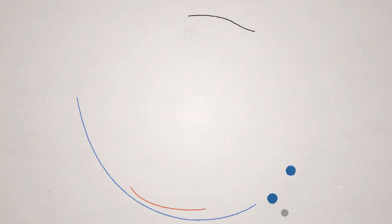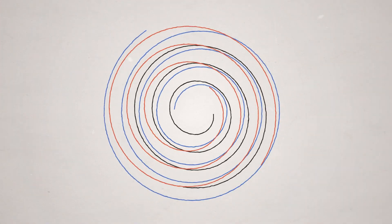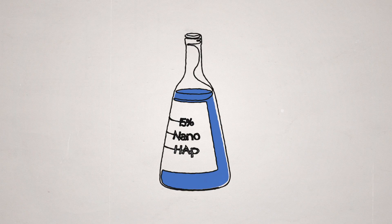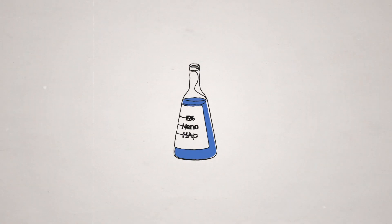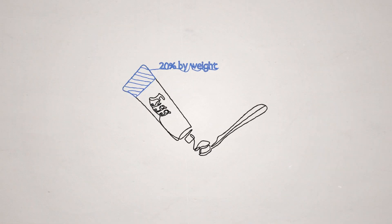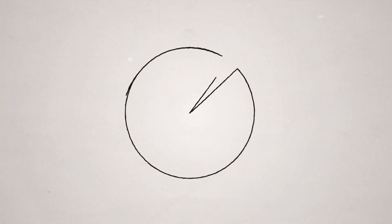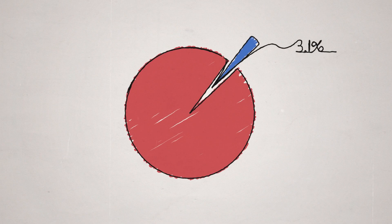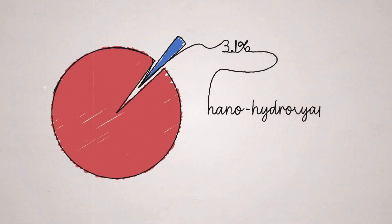Now let's look at our recipe once we mix it all together. Since our 15.5% solution of nanohydroxyapatite makes up 20% of our toothpaste by weight, a little math shows us that a total of 3.1% of our toothpaste is now made up of nanohydroxyapatite.